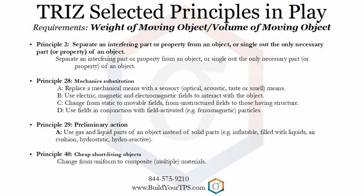Principle 2: Taking Out. This means to separate an interfering part or property from an object, or single out only the necessary part. For example, this could mean substituting materials or offboarding components. Another example would be to move an air compressor outside the building you're painting in.